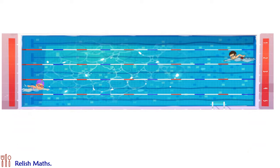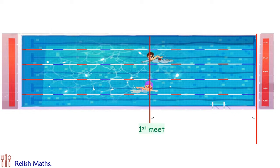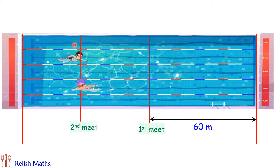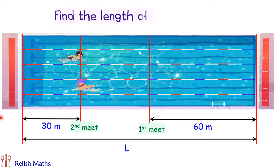They started swimming together and while swimming they met for the first time at a distance of 60 meters from right side end. Now after first meeting they continued swimming and B reached the other end first, turned back, then A reached the end and they met again for the second time at a distance of 30 meters from the left end. Now using this data, the question is what is the length of swimming pool?